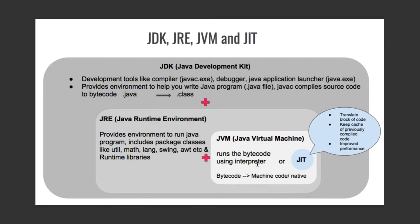The problem with the interpreter is that it executes the bytecode line by line, which makes execution slower. The Just-In-Time compiler uses a sophisticated algorithm to translate a block of code, and it also does caching of previously compiled code. So the next time a method is called, it can be called directly without needing to recompile, which improves the overall performance of JVM.